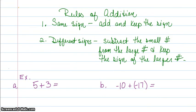The rules of addition state: if we have the same sign, add and keep the sign. If we have different signs, subtract the small number from the large number and keep the sign of the larger number.